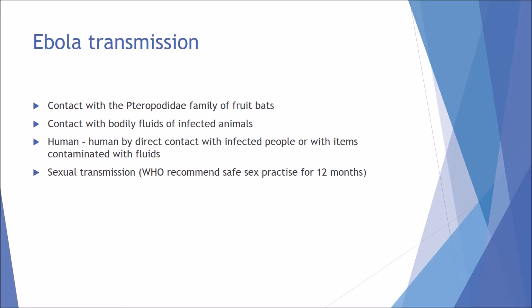Contact with bodily fluids of infected animals is a key transmission route — this includes bat saliva on mangoes, faeces, urine, or fluids from infected chimpanzees. Human-to-human transmission occurs by direct contact with infected people or items contaminated with their fluids — urine, blood, saliva, sweat — all of which can become a source of infection.